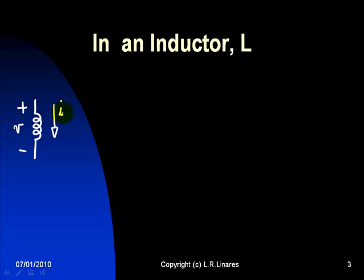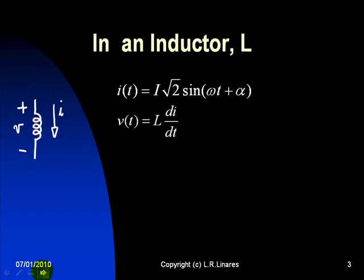if the current is I, a sinusoidal function of time, let's find what is the voltage. The current is given to us, it is a sinusoidal function of time with a given frequency, omega radians per second, a phase shift alpha, and an RMS value I. To find the voltage in the inductor, we start with this expression: v equals L di/dt. We know the inductance of the inductor L. We know the current I as a function of time.